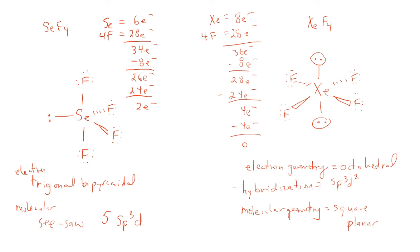You might think we broke the octet rule because selenium and xenon each have more than eight valence electrons. Remember that phosphorus and beyond can break the octet rule because they have access to empty d orbitals. It's okay to break the octet rule as long as the element has access to empty d orbitals.